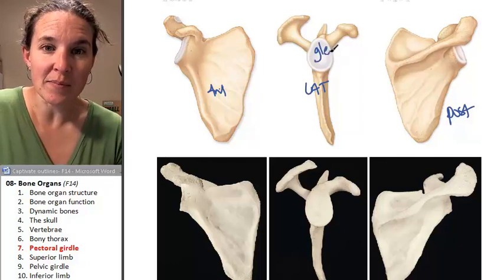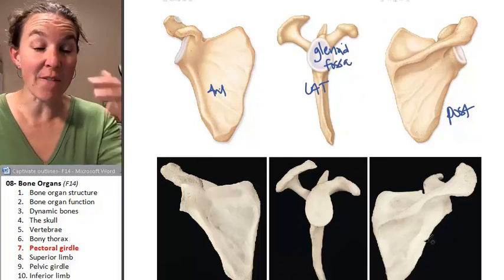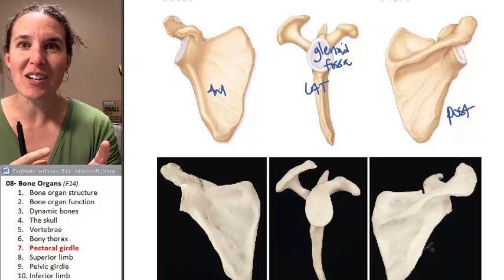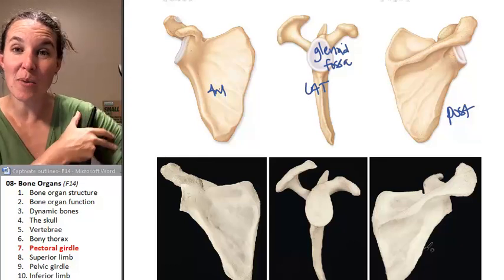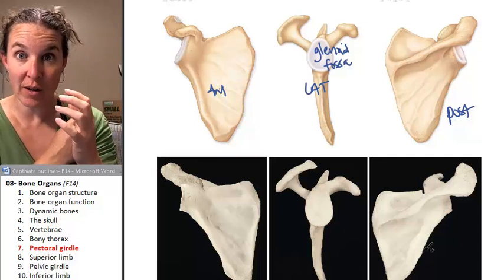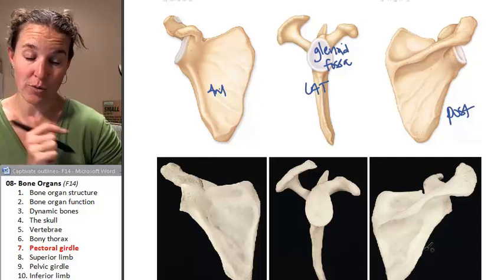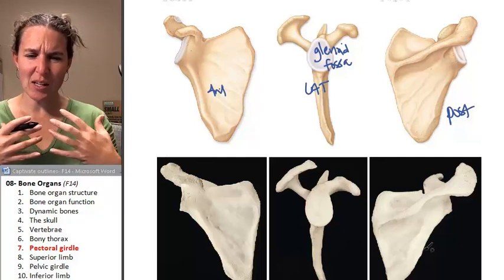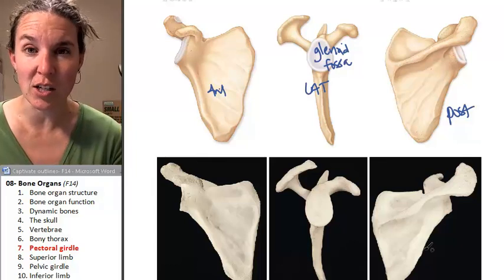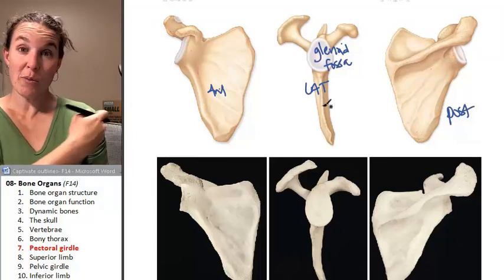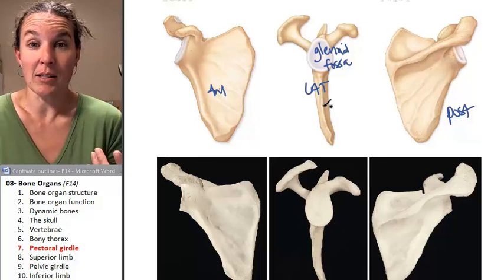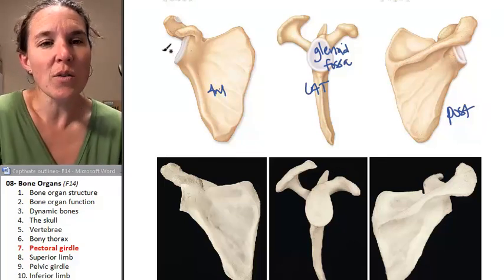This is the glenoid fossa. The glenoid fossa is a smooth articulation where the humerus attaches. The humerus is your upper arm bone, so the humerus actually sticks into the glenoid fossa and forms your shoulder joint. Now, if the glenoid fossa is on your scapula, is it medial or lateral if it's attaching to the humerus? It's lateral — because if it was medial, your arm would be coming out of the middle of your back.